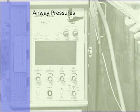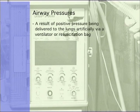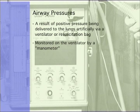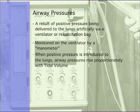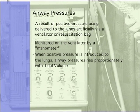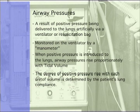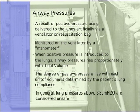Airway pressure. Airway pressure is a result of positive pressure being delivered to the lungs artificially via a ventilator or resuscitation bag. This value is monitored on a ventilator by a manometer. Spontaneous breathing individuals have very low to zero positive pressure in the lungs. However, when positive pressure is introduced via mechanical ventilator or manual resuscitator, airway pressures rise proportionally with tidal volume. The degree of positive pressure rise with each unit of volume is determined by the patient's lung compliance. Lung compliance changes greatly with lung disease and should be monitored closely in volume ventilation. In general, lung pressures above 35 centimeters of water are considered to be unsafe and should be avoided.